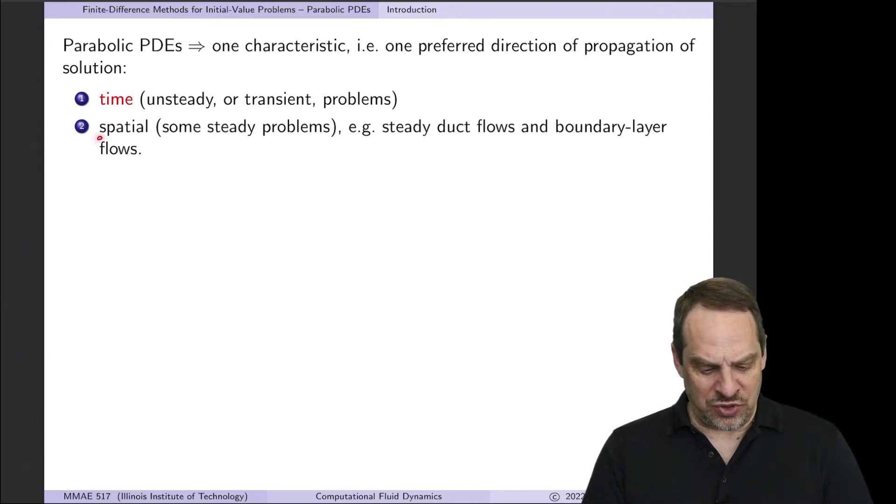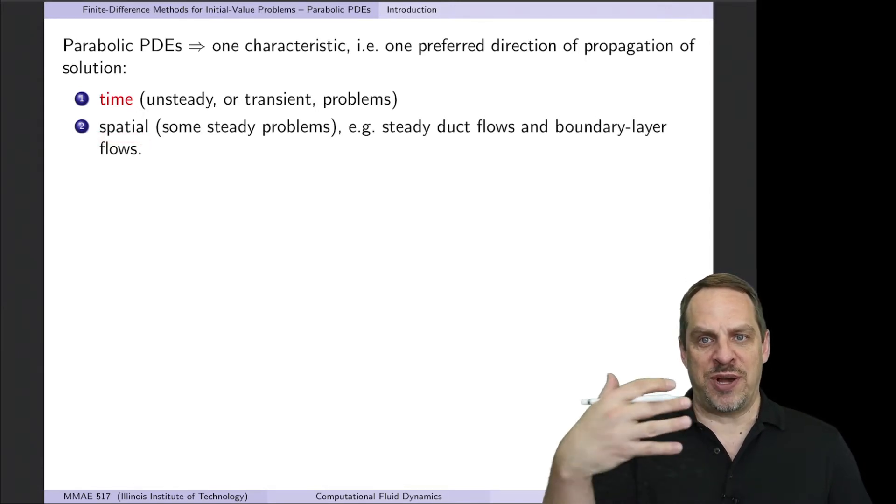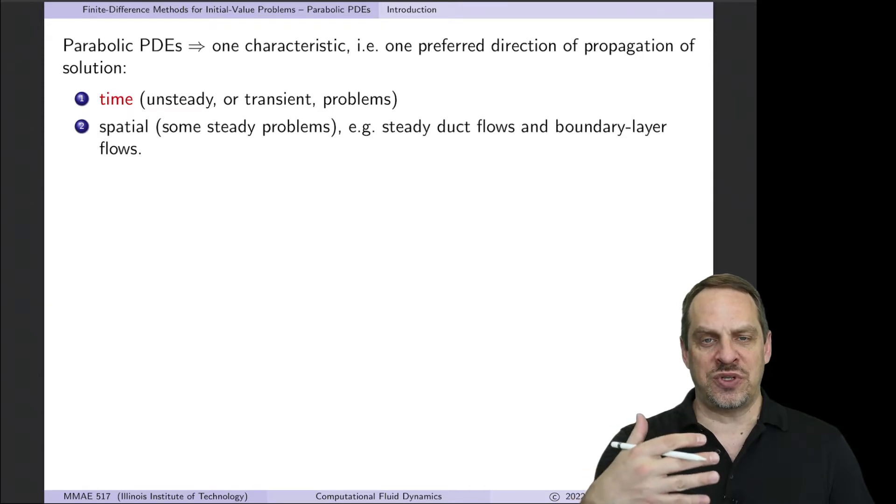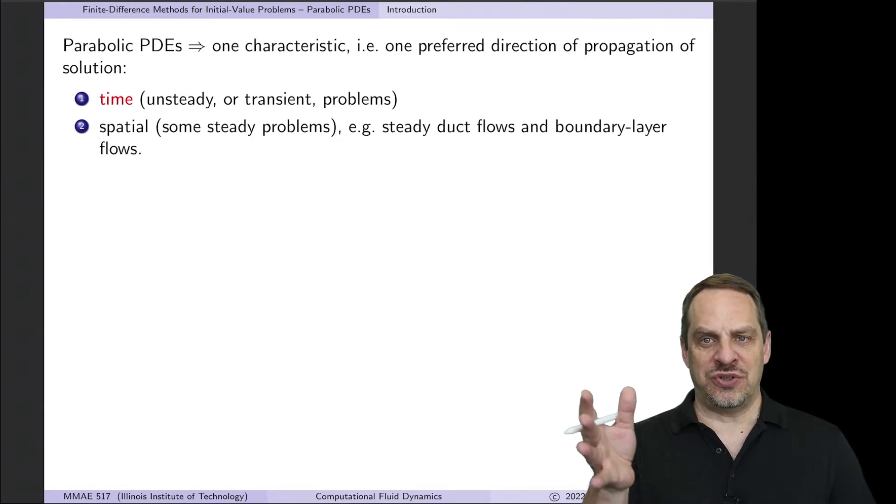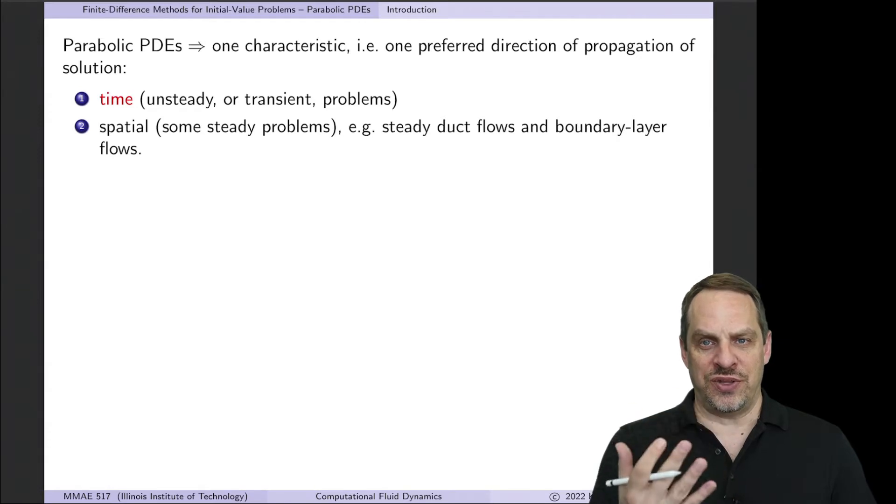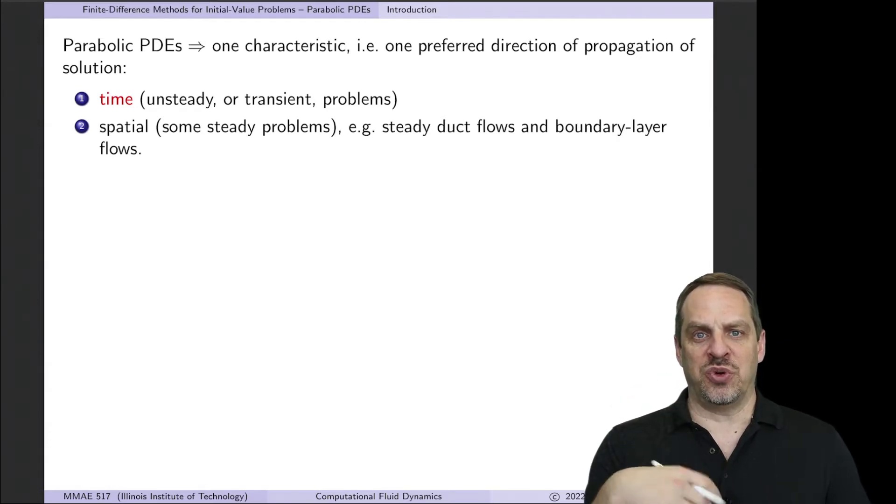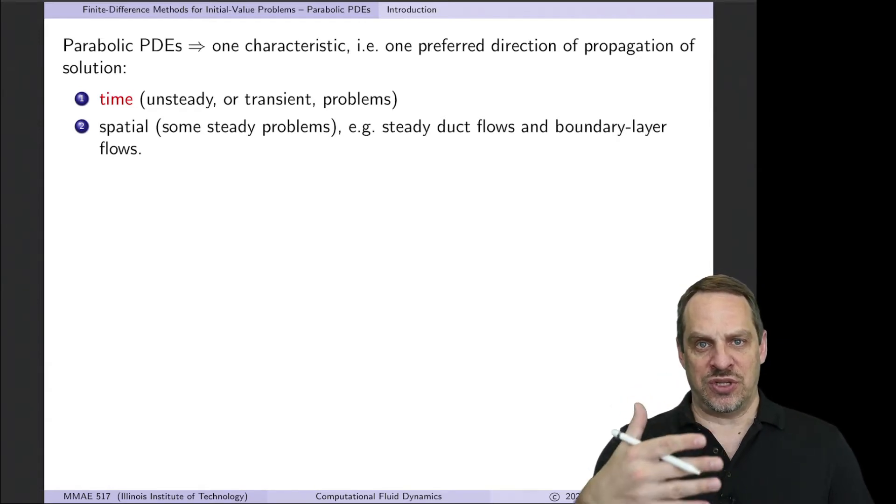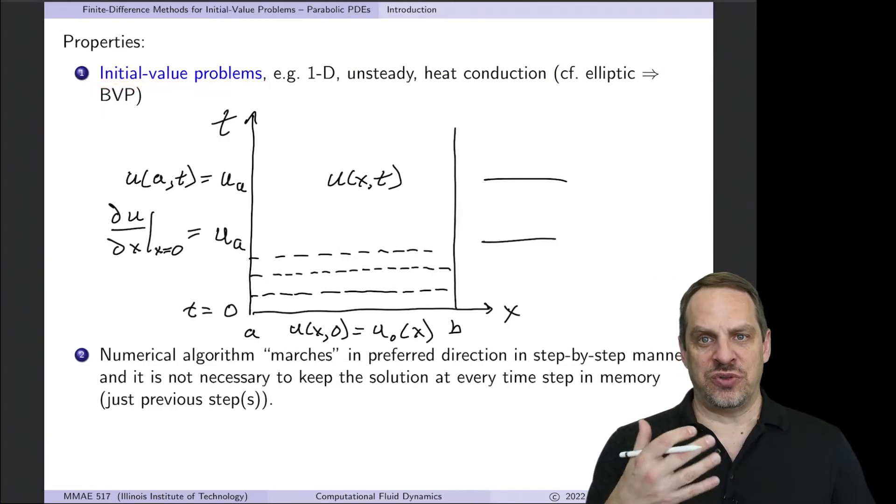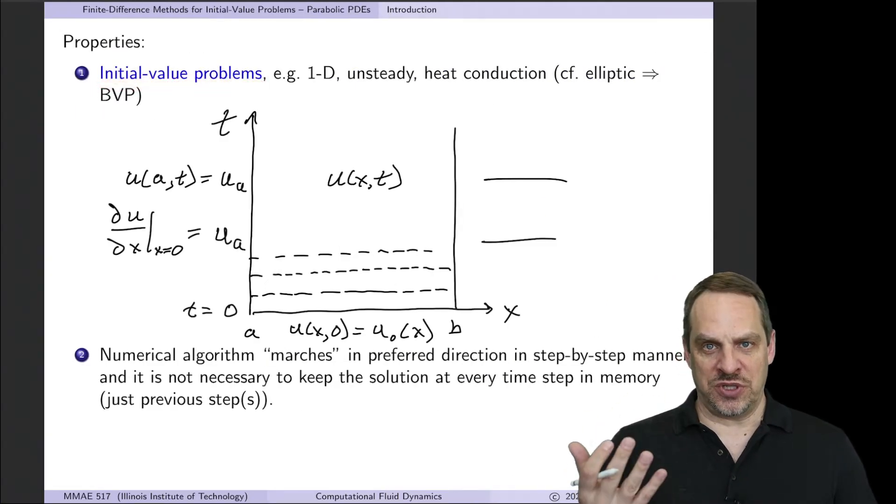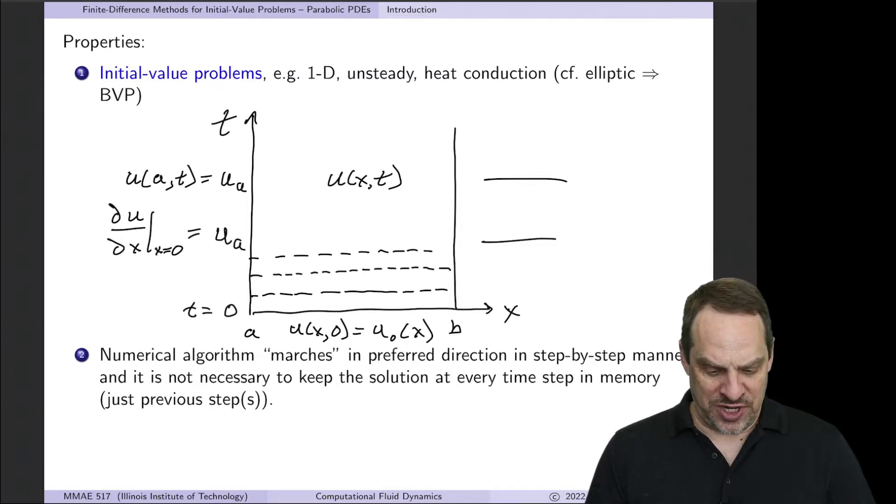However, remember that it could also be a spatial direction which is propagating. So even for steady problems, in some cases they end up giving us initial value problems, parabolic partial differential equations, because there is a preferred direction of propagation in a spatial direction rather than time. But we'll think of it in terms of the more common case, which is propagation in time. So these are initial value problems as opposed to boundary value problems, elliptic equations, as we discussed in the previous chapter.